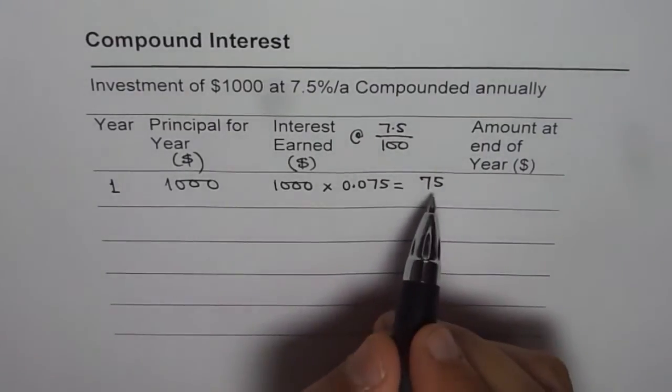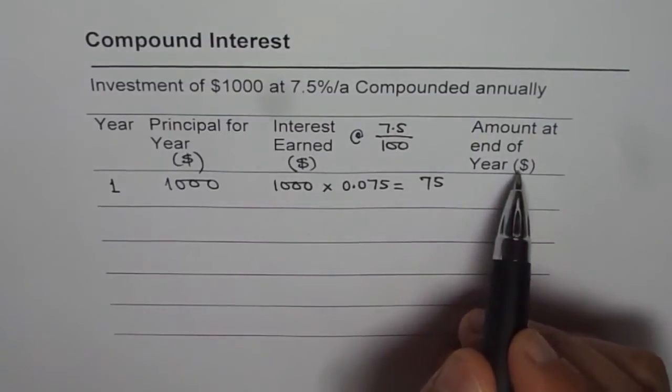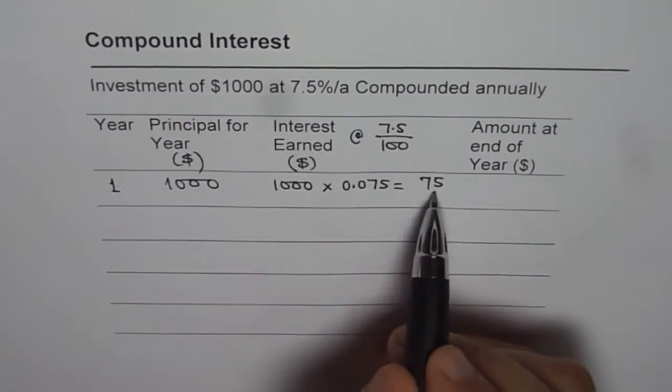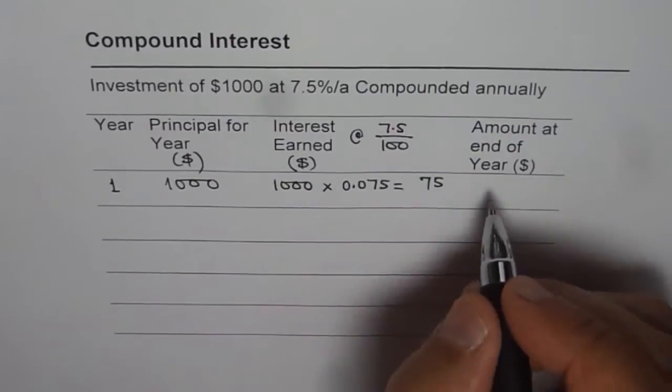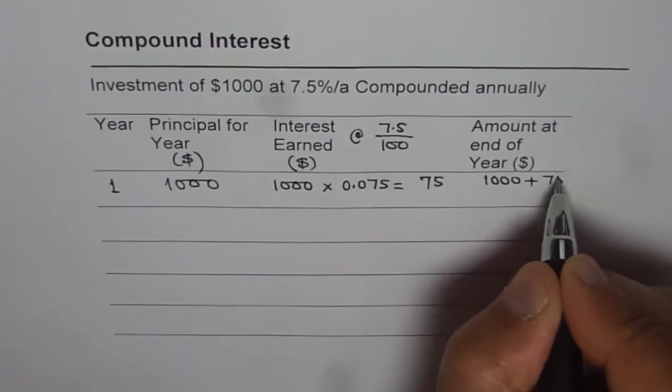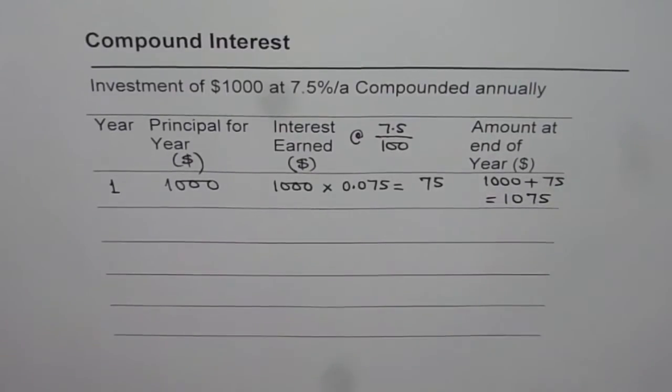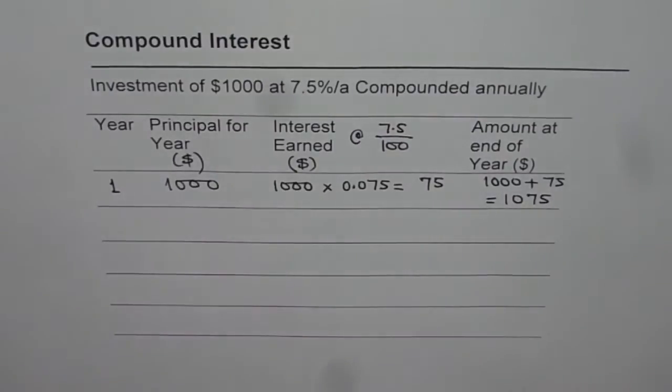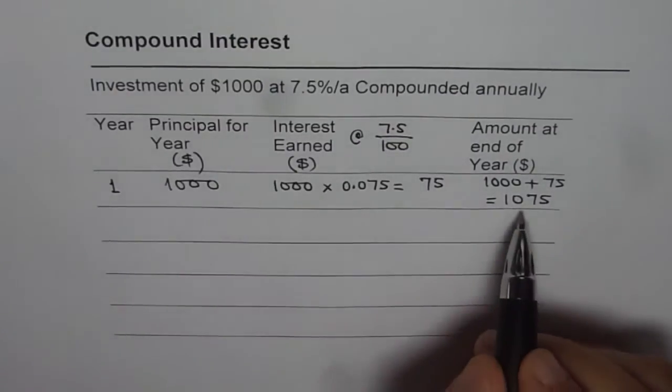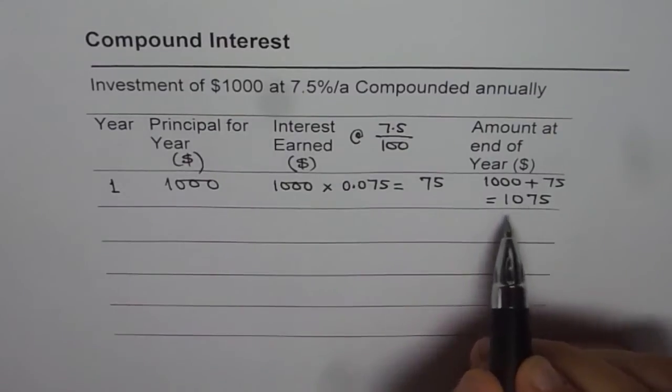If $75 is the interest earned, amount at the end of the year is going to be initial amount of $1,000 plus interest of $75, which gives us 1,075. Now, we are considering compound interest. In compound interest, this is the amount on which we are going to get the interest next year.